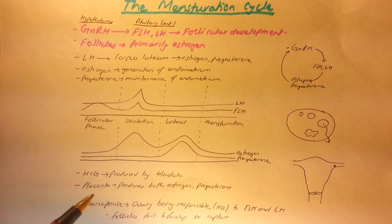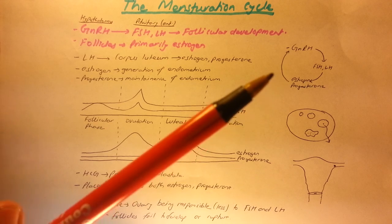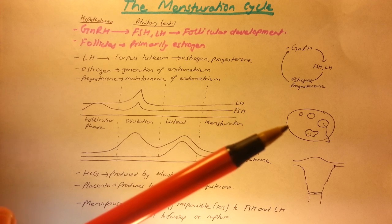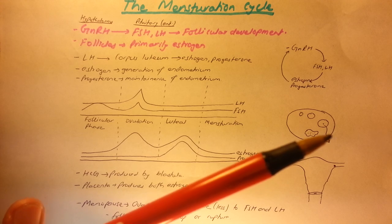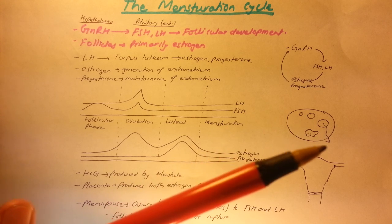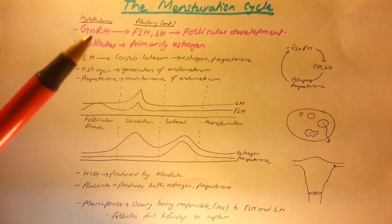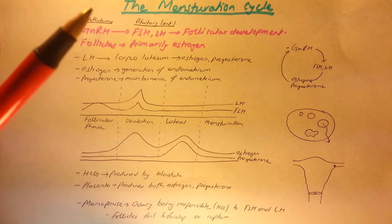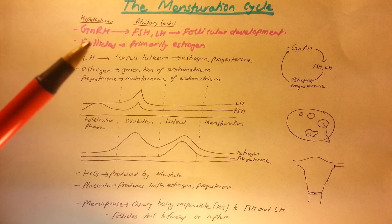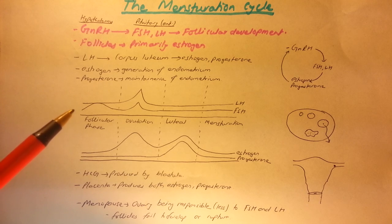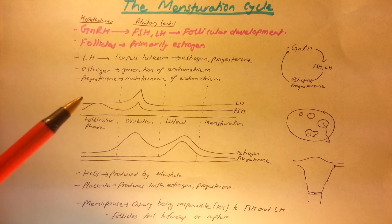During menopause, the ovary becomes less responsive to FSH and LH. When the ovary becomes less responsive, the follicles fail to develop or rupture, and women can no longer conceive. That concludes our discussion of the menstruation cycle, pregnancy, and menopause. I hope you understood this video — I've tried to explain it in a simple way. Thank you for watching, and please post below if you have any questions.